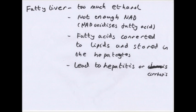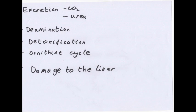Fatty liver occurs when there is too much ethanol: not enough NAD remains, fatty acids are converted to lipids and stored in the hepatocytes, leading to hepatitis or cirrhosis. This causes swelling of the liver, scar tissue formation, and is very harmful. In conclusion, you need to excrete CO2 and nitrogenous compounds such as urea. You deaminate amino acids and turn them into urea via the ornithine cycle. Detoxifying alcohol in excess can cause liver damage. Other substances that can damage the liver include paracetamol — a common painkiller broken down by the liver — where excess amounts can lead to liver and kidney failure. Insulin, a hormone controlling blood glucose concentration, is also broken down by the liver, as excess insulin can cause problems with blood sugar levels.